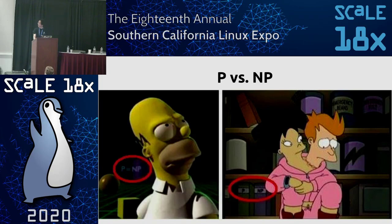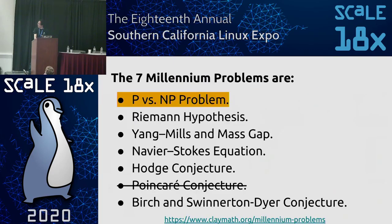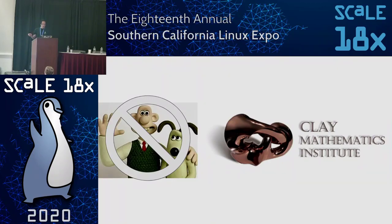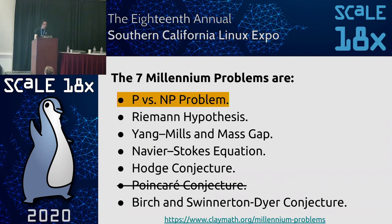You may have seen P versus NP referenced in an episode of The Simpsons or Futurama — both have very differing opinions about it. You may have also recognized it as one of the Millennium Problems, essentially bug bounties set by the Clay Mathematics Institute of Cambridge, which awards $1 million for a solution to each problem.